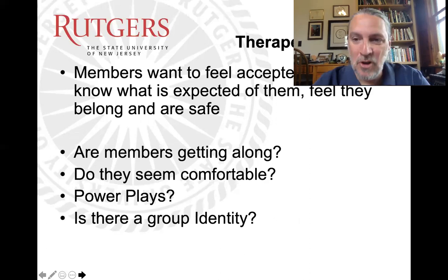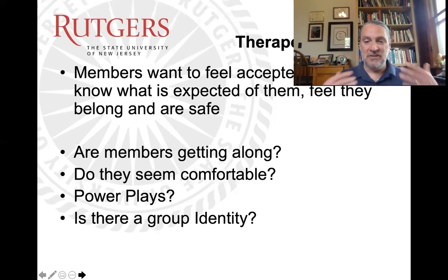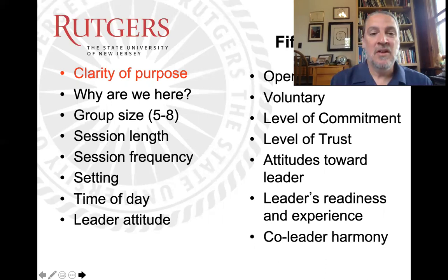Therapeutically, members want to belong and feel safe — part of your role as facilitator is ensuring they are safe in the group. Are people getting along? Are they teaming up against each other? Whenever people get together, a hierarchy forms, and part of your job is ensuring everyone has equal value. What's going on with the group identity? Are they coalescing? In video two, we'll talk about the evolution of a group and how that group identity is formed.